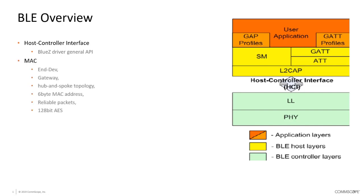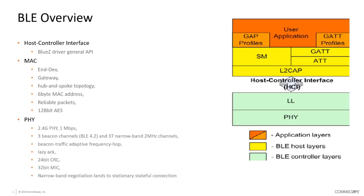At the MAC layer, the MAC specifically defines a number of capabilities, including the ability to be an end device gateway and hub-and-spoke technology — connecting one hub to multiple devices. The MAC itself uses a 6-byte MAC address and is designed around reliable packet exchange with 128-bit AES encoded data. At the physical layer, the BLE stack uses a 2.4 GHz PHY with an approximate 1 Mbps data rate.